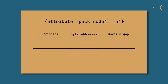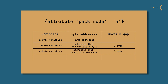If your pack type is 4-byte aligned, then 1-byte variables are assigned to byte addresses, and 2-byte variables are assigned to addresses divisible by 2 with a maximum gap of 1 byte. 4-byte variables are assigned to addresses divisible by 4 with a maximum gap of 3 bytes. And 8-byte variables are assigned to addresses divisible by 4 with a maximum gap of 3 bytes.